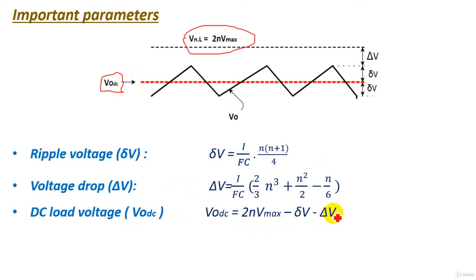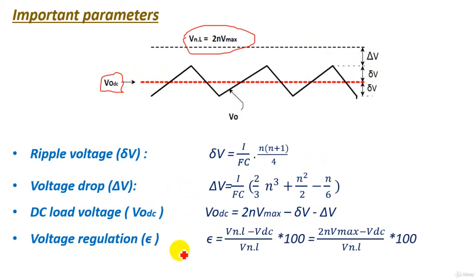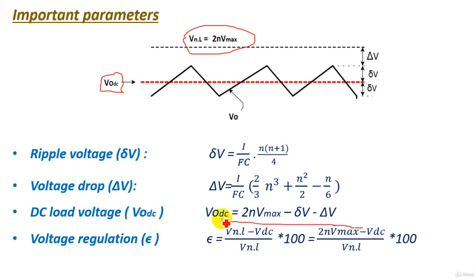The DC output voltage is: V_dc = 2nV_max − ripple voltage − voltage drop. We also have the voltage regulation, which measures the total drop as a percentage: ε = (V_no-load − V_dc) / V_no-load × 100%, where V_no-load = 2nV_max. This gives the percentage total drop in the circuit.